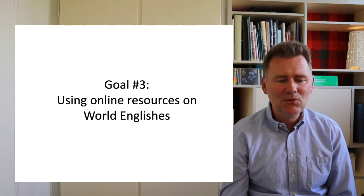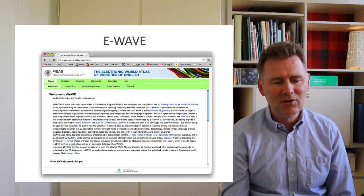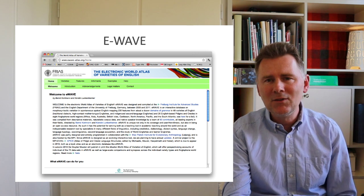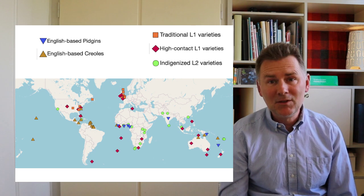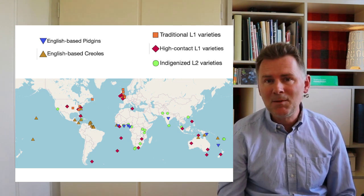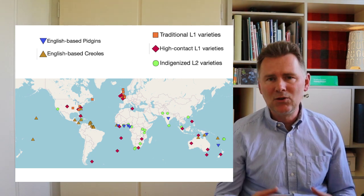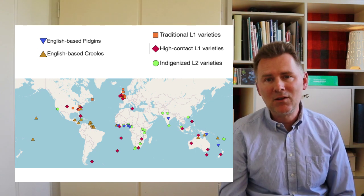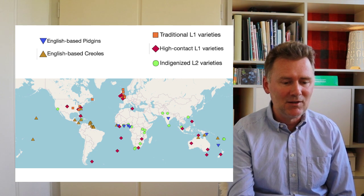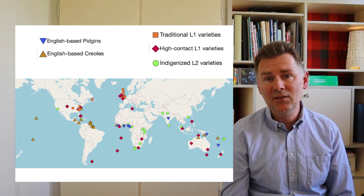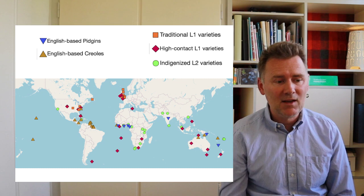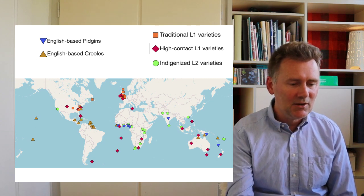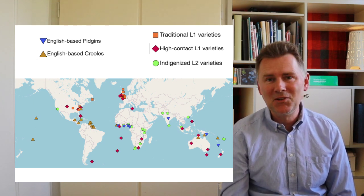Let's go on to goal number three: using online resources on World Englishes. There's one resource I'd like to draw your attention to — the Electronic World Atlas of Varieties of English, or E-Wave. This is a fantastic resource that allows you to explore how Englishes are used and spoken around the world. The E-Wave distinguishes between five different types: traditional L1 varieties (traditional dialects spoken in Britain), high-contact L1 varieties (such as African-American Vernacular English and Maltese English), indigenized L2 varieties (like Malaysian English), and English-based pidgins and creoles such as Cameroonian Pidgin and Jamaican Creole.